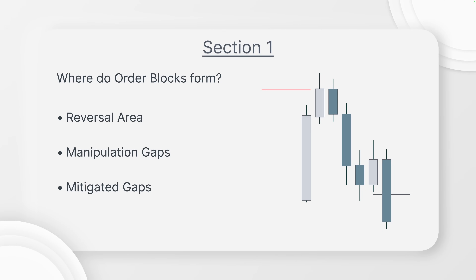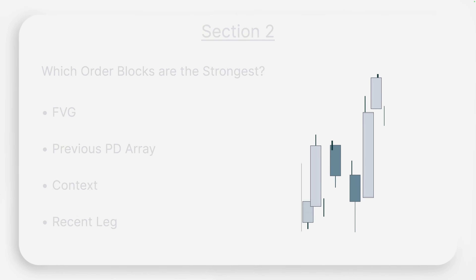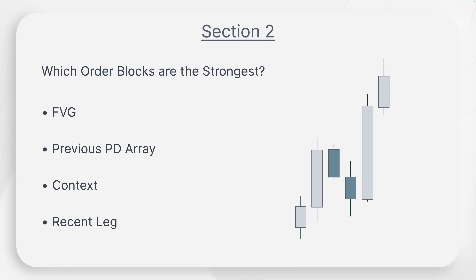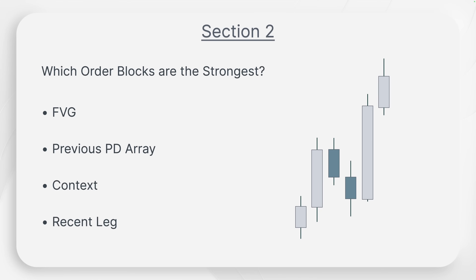Before we dive into the chart on where order blocks form, I want to combine this section with section two — which order blocks are the strongest ones, and what creates a valid order block. The first thing we need to understand is FVG, fair value gap. Fair value gaps are the superior PD array. Without a fair value gap, nothing is valid. Meaning there is no order block if there is no fair value gap.